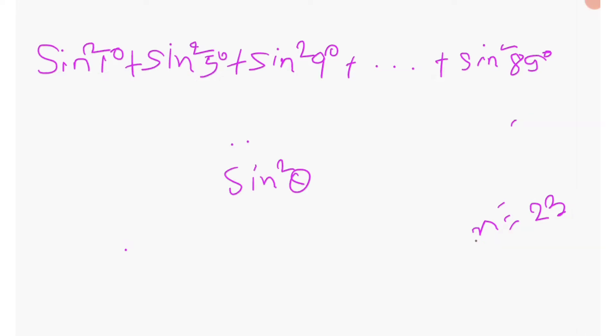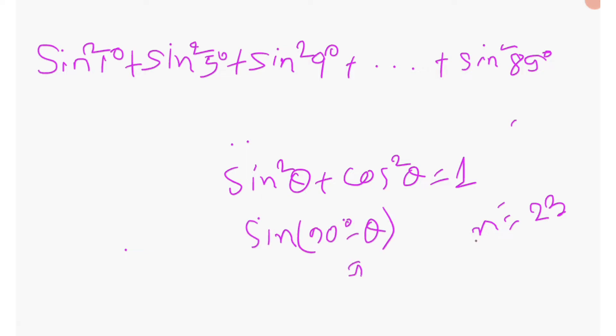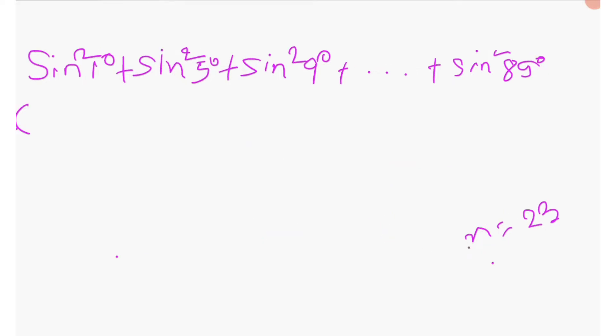We are going to use two formulas: sin square theta plus cos square theta equals 1, and sin(90 degree minus theta) equals cos theta, or equivalently cos(90 degree minus theta) equals sin theta.